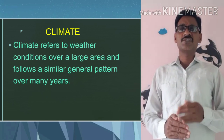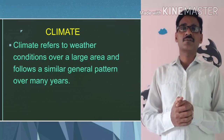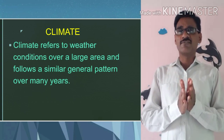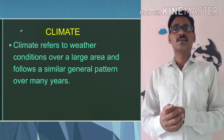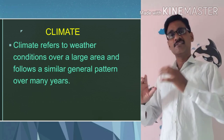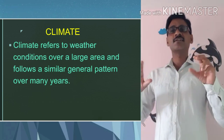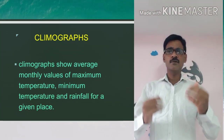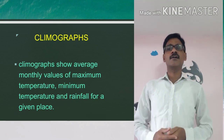Climate is not fluctuated often like the weather. Sometimes we get more rainfall in one year and sometimes we get low rainfall in another year, but the particular pattern of climate is not changed. The graphs which show the elements of weather or climate are called climographs.